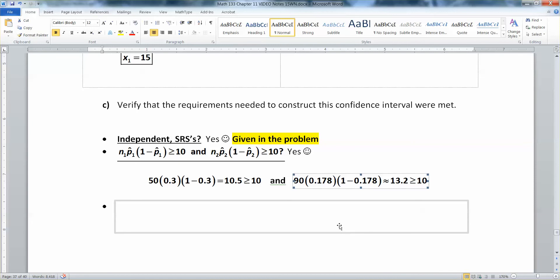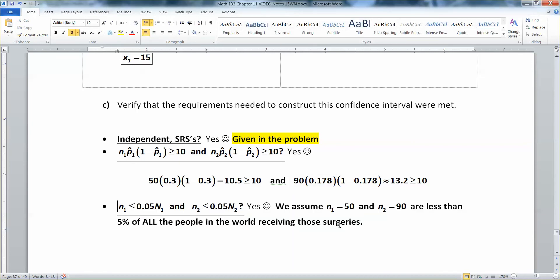And the last part, we're just going to kind of wave our hands a little bit. This probably isn't a fabulous assumption on our parts, but we are going to assume that N1 is 50 and N2 is 90 or less than 5% of all people in the world receiving the surgery, whatever it is. If this is a rare surgery, that's not a fair assumption to make here, but if we don't make this assumption, we can't proceed. So we're just going to assume this is the case.